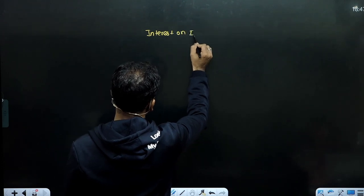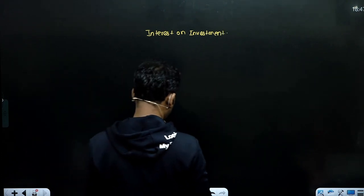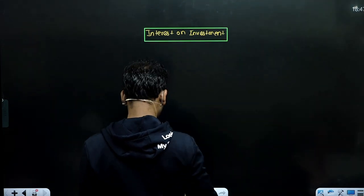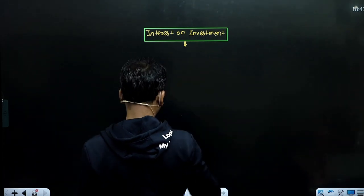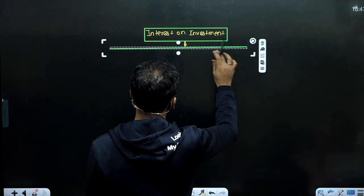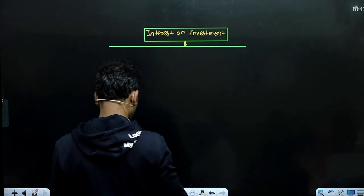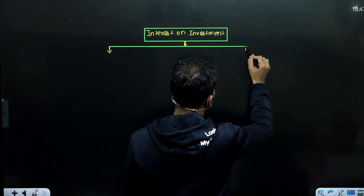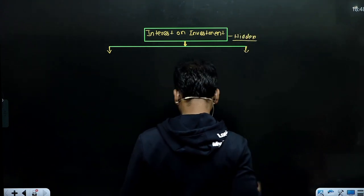Interest on Investment — ये भी Hidden Adjustment का ही पार्ट है। पहले देख लेते हैं Sir, कैसा हो सकता है इस structure में।